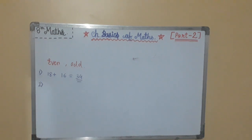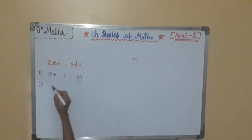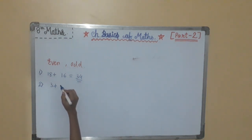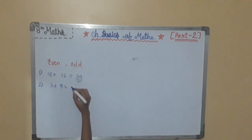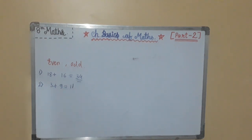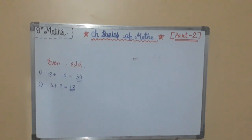Property 2: the sum of two odd numbers is even. We can take any two odd numbers, like 3 plus 9. That equals 12, and 12 is an even number. So this property holds.